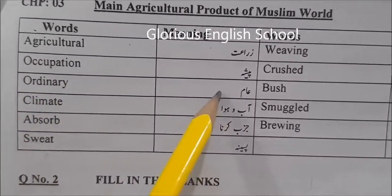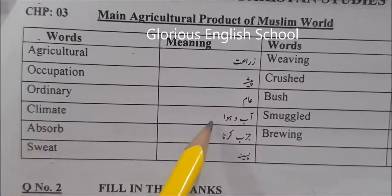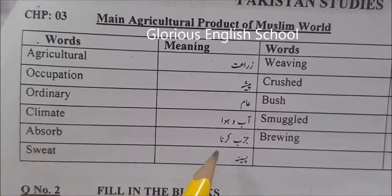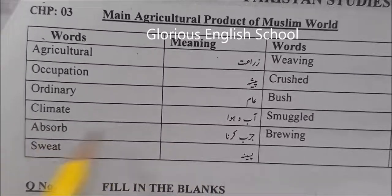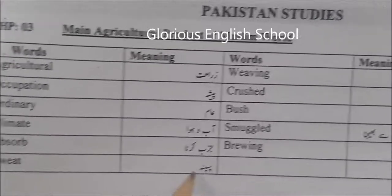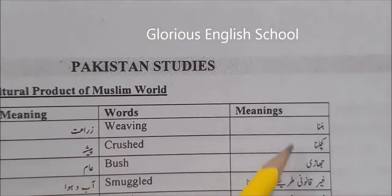Ordinary means aam. Climate means abo hawa. Absorb means jasp karna. Sweat means pasina. Waving means bunana.